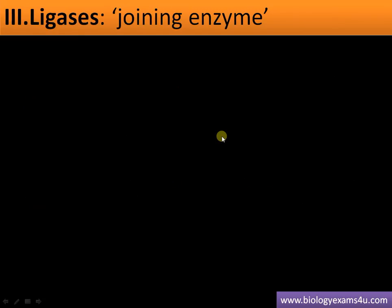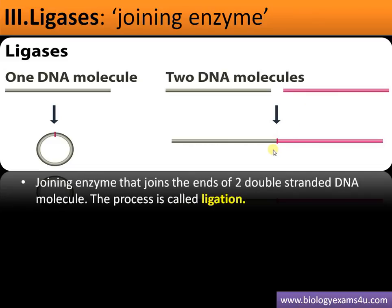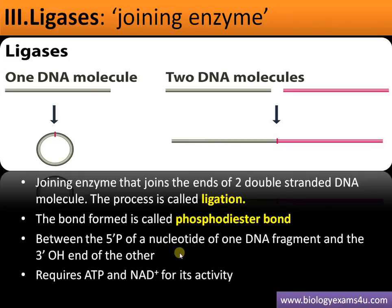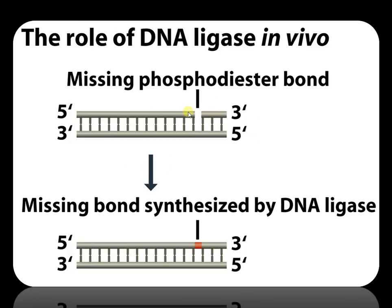Finally, the third class is ligases — the joining enzymes. Once we have two DNA molecules from two different sources, one being the desired DNA and the other a vector, we need to join them. This final joining or sealing is done by DNA ligase. Ligase joins two double-stranded DNA molecules by forming a phosphodiester bond between the 5'-phosphate of one DNA fragment and the 3'-OH of the other. It requires ATP and NAD+ for its activity. Because it seals the nick, it is called a sealing enzyme or molecular glue.